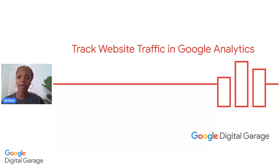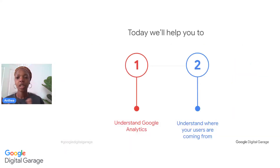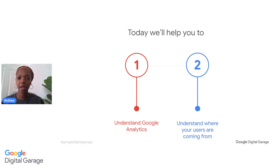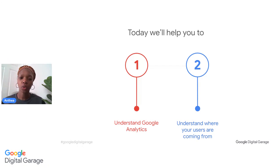So that's just some brief housekeeping for today. Today's session is all about how you can use Google Analytics to track your website traffic. We're going to look at understanding Google Analytics and then identifying where your users are actually coming from. At the end of this course, you should be able to understand how to find the data on Google Analytics on where your users are coming from and how you can utilize that information to improve your marketing and connect with your audience.